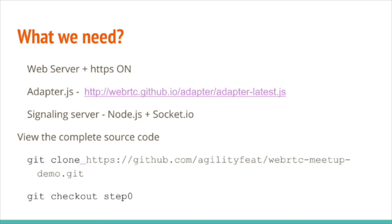I'm also going to use Adapter.js, which is optional — you don't have to use it if you don't want to, but I think it's a good practice. I'm also going to use a signaling server. For this demo I'm using one I've already deployed on Heroku. I'm not going to write the code now, but it's based on Node.js and Socket.io. You can download the code from our public repository on GitHub. If you want to follow along, I'm going to start from the branch step 0.